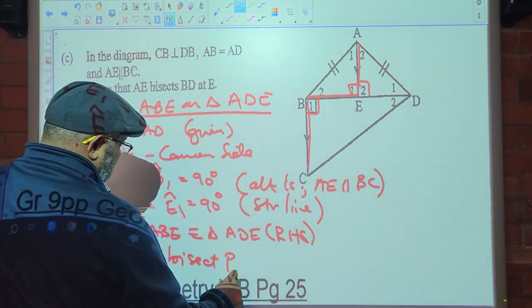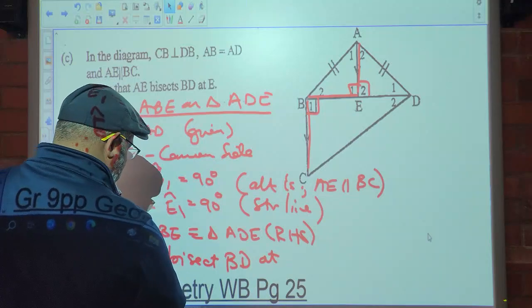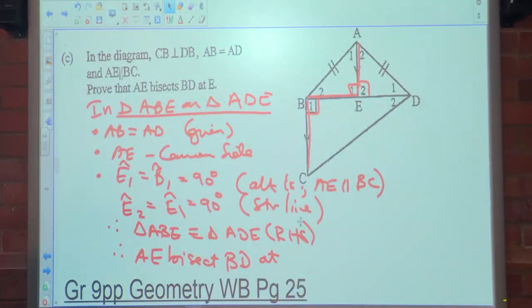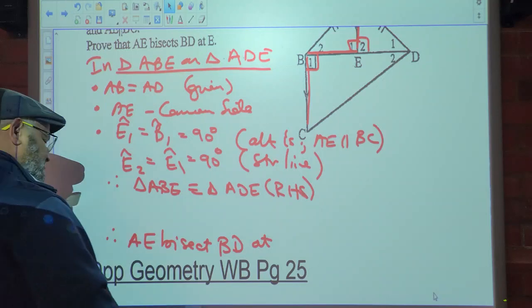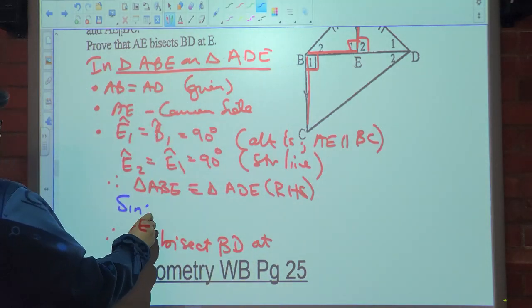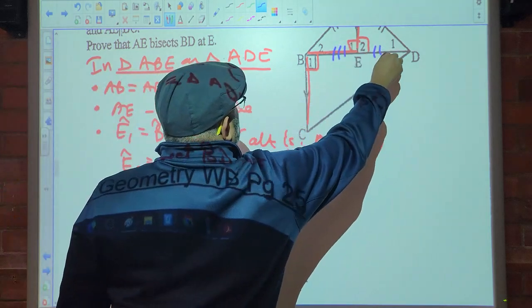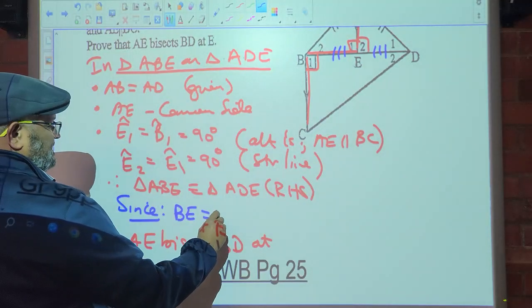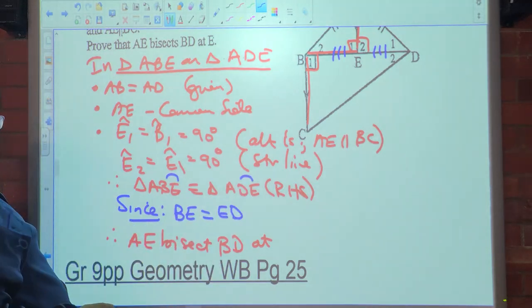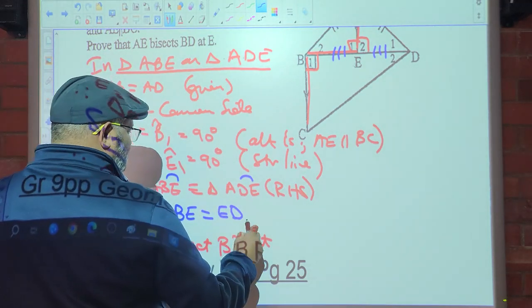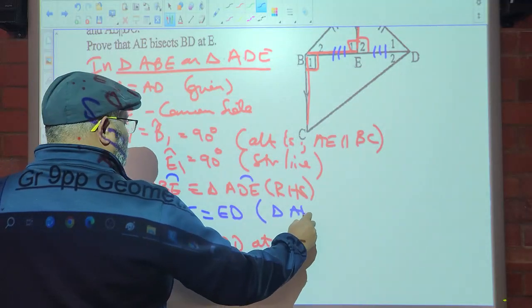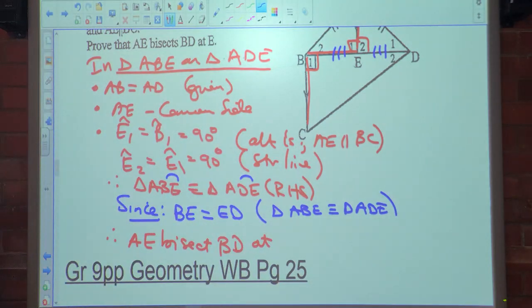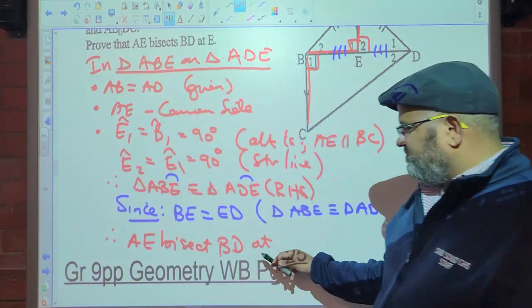Have you answered the question? No. Therefore AE bisects BD. Since BE is equal to DE — where am I getting this from? From here. Because triangle ABE is congruent to triangle AD. Therefore AE bisects BD, which means it cuts BD in half.